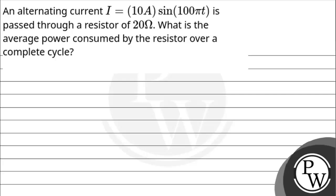Hello, let's read this question. An alternating current I = 10A sin(100πt) is passed through a resistor of 20Ω. What is the average power consumed by the resistor over a complete cycle?